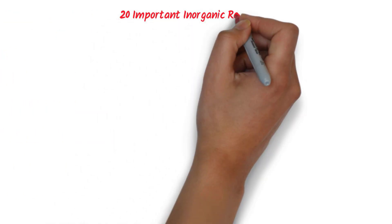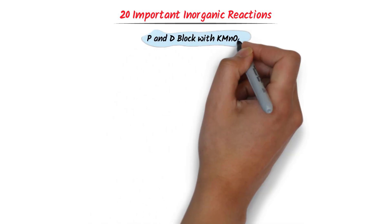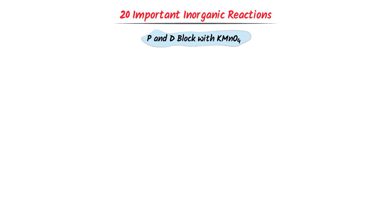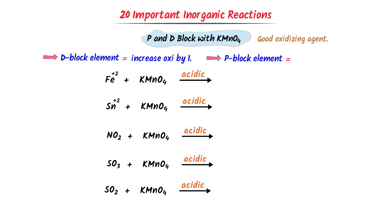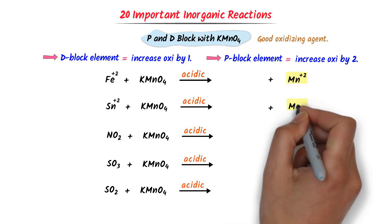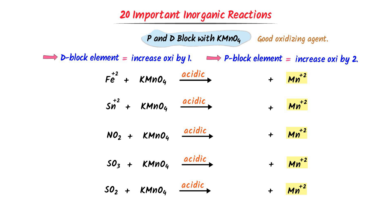Now we will learn 20 important reactions. The first five involve d and p block elements reacting with KMnO₄, which is a good oxidizing agent. The common trick: if the element is from the d block, increase its oxidation state by one; if from the p block, increase it by two. In all these reactions, Mn²⁺ is produced. In the first reaction, Fe is from the d block — I increase its oxidation state by one.